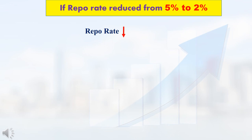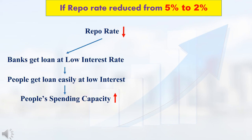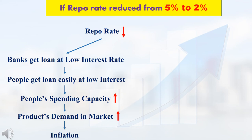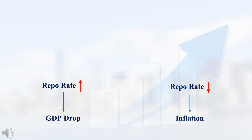You may think — why not the government reduce the repo rate so that Indian GDP will increase? If the repo rate is reduced, for example if the Indian government suddenly reduces the repo rate from 5% to 2%, people will get loans at very low interest rate and easily get loans. So people's spending capacity will increase — they will spend more money and buy more products. Because of this, demand for products will increase in the market, and because of high demand, price of products will increase. Finally this will lead to inflation. So if repo rate is increased, GDP will reduce; if repo rate is decreased, that will lead to inflation. So the government always balances the repo rate between GDP and inflation.